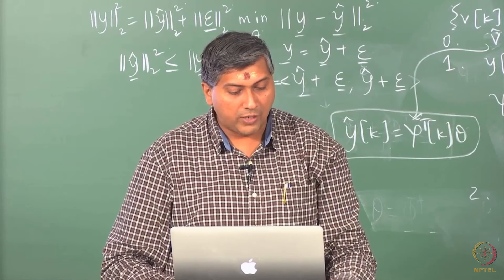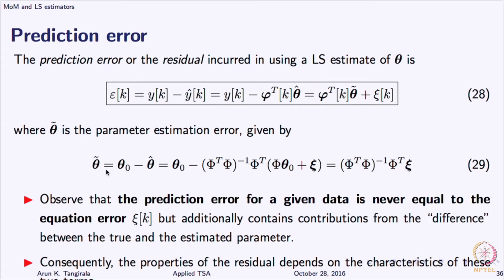So here is your equation 29 now because this is what we are going to use for commenting on the bias, for computing the variance, for talking of consistency, everything. What is theta tilde? Simply the error between the truth and estimate. We have just done some algebra here and we have managed to write this as phi transpose, phi transpose phi inverse phi transpose Z. Now this equation is the most important thing that we have to work with.